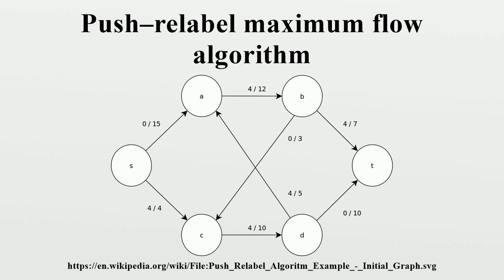The Push-Relabel algorithm has been extended to compute minimum cost flows. The idea of distance labels has led to a more efficient augmenting path algorithm, which in turn can be incorporated back into the Push-Relabel algorithm to create a variant with even higher empirical performance.